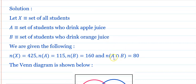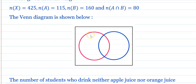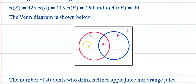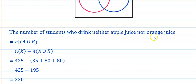We are given: n(X) = 425, n(A) = 115, n(B) = 160, n(A intersection B) = 80. Drawing a Venn diagram: A intersection B = 80. Students who drink only apple juice = 115 minus 80 = 35. Students who drink only orange juice = 160 minus 80 = 80.